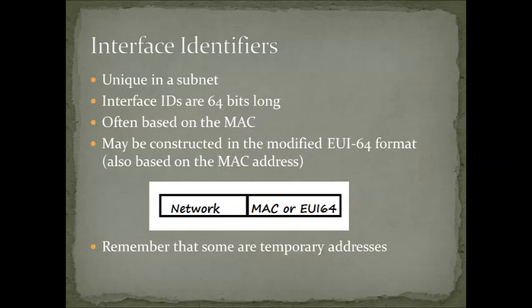In an IP Version 6 address, a big chunk — 64 bits worth — is based on the network, and 64 bits is based on the MAC address via EUI-64. In some cases even IP Version 4 addresses are thrown in there, although that's not what we're talking about now. Some of these are temporary addresses, so traffic from a particular node can use several different addresses when you look at it on the network. That's one of the things that makes IP Version 6such a pain to track on a network.